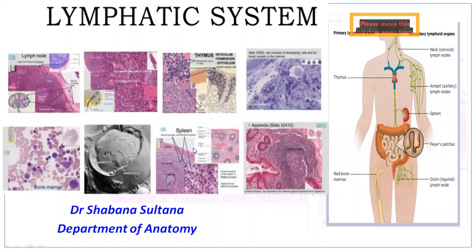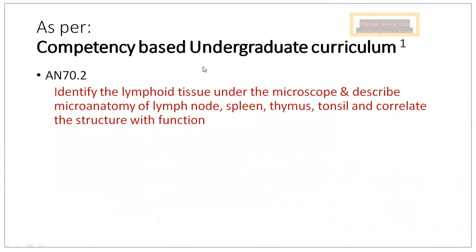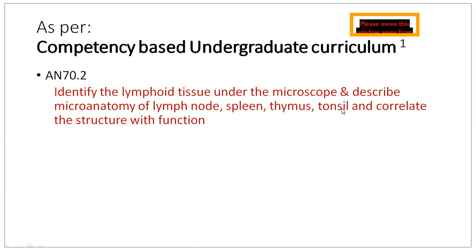Good morning dear students. We are going to discuss the lymphatic system today. The lymphatic system helps us fight against various infections. With COVID virus and novel viruses coming into picture, understanding this will enlighten your knowledge regarding the immune system. As per our competency-based undergraduate curriculum in anatomy, we are supposed to identify lymphoid tissue under the microscope, describe the micro-anatomy of lymph nodes, thymus, tonsil, and correlate structure with function.